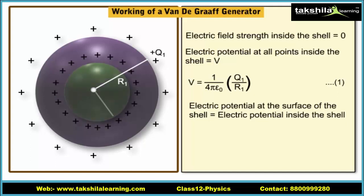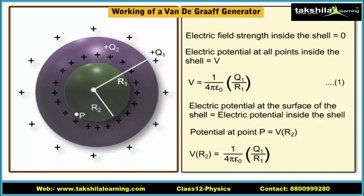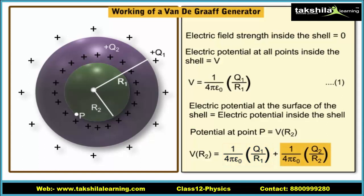Let us assume that there is another smaller concentric sphere of radius R2 with charge Q2 on it. Now let us consider the potentials at the surfaces of the inner and the outer spheres. Let the potential at any point P on the surface of the inner sphere be Vr2. This potential is due to the charge on both the spheres. Then Vr2 is equal to (1/4πε₀)(Q1/R1) + (1/4πε₀)(Q2/R2). Here, (1/4πε₀)(Q1/R1) is the potential due to the charge on the outer sphere, and (1/4πε₀)(Q2/R2) is the potential due to the charge on the inner sphere.